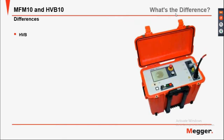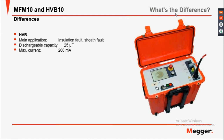So what are the differences? For the HVB, the main application is insulation pulse and sheath faults, with a dischargeable capacity of up to 25 µF. The maximum current is 200 mA. The minimal measurable voltage is 5 µV.